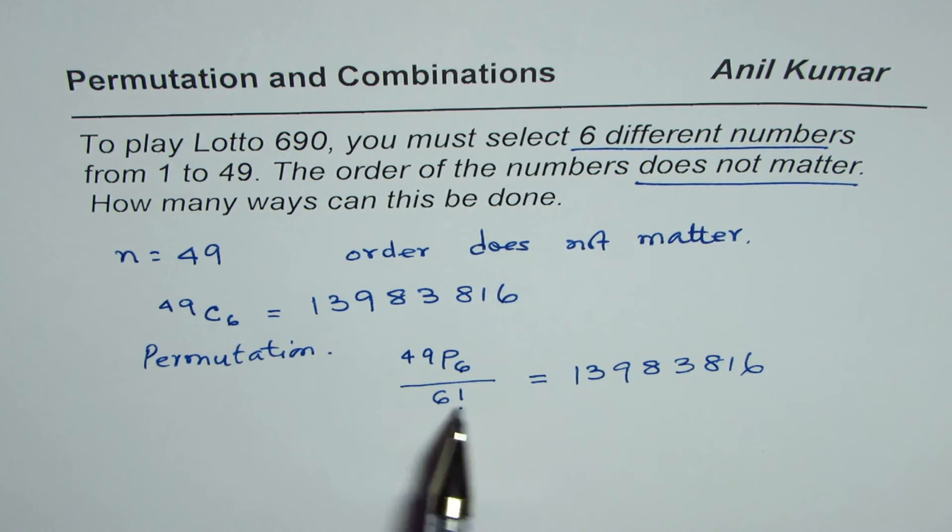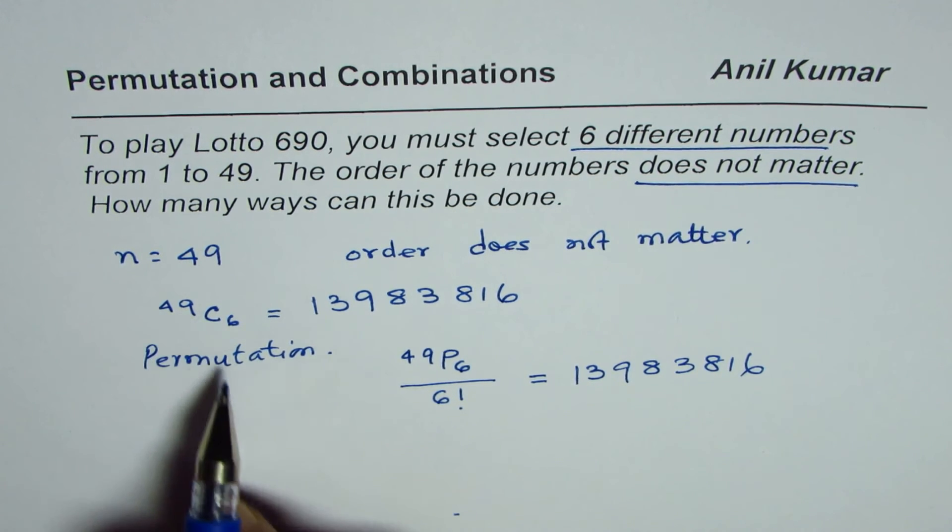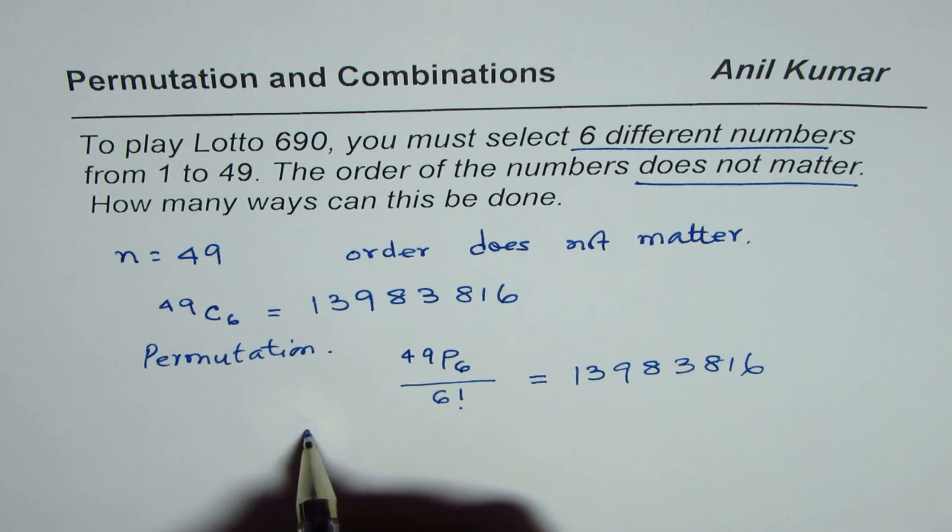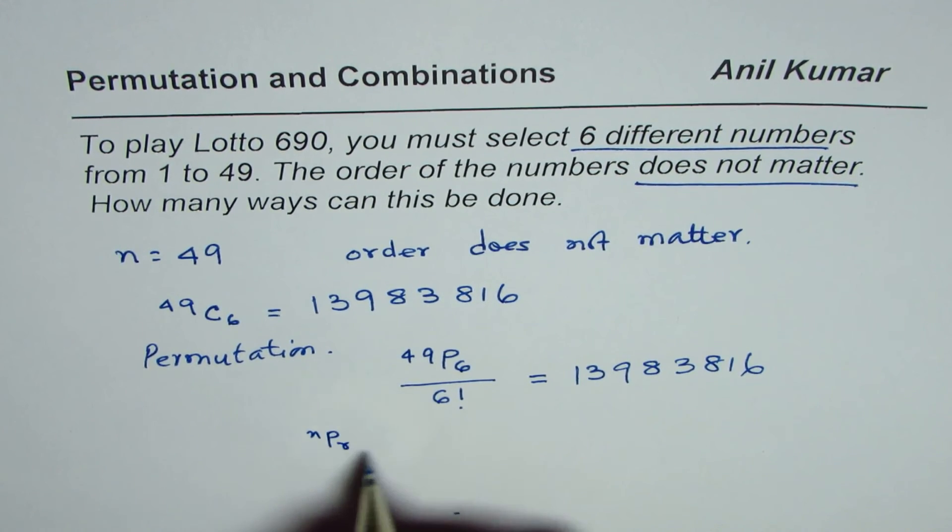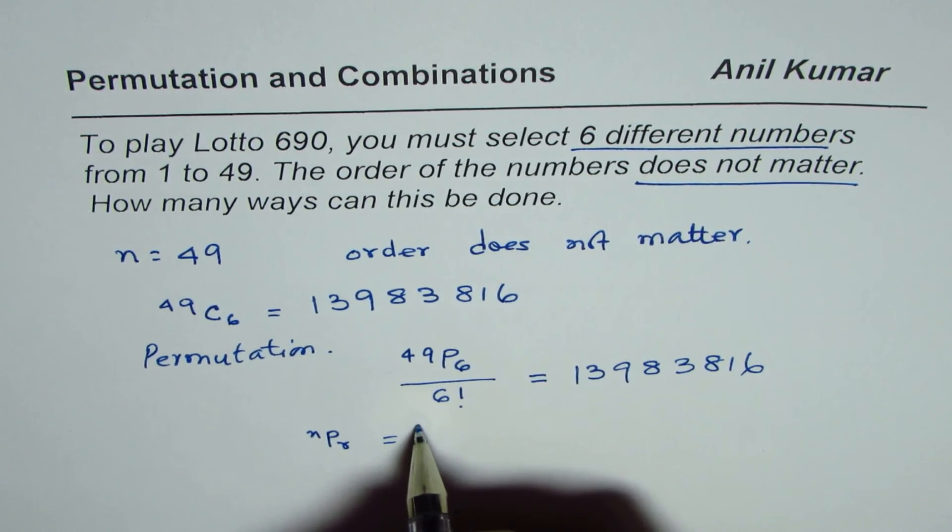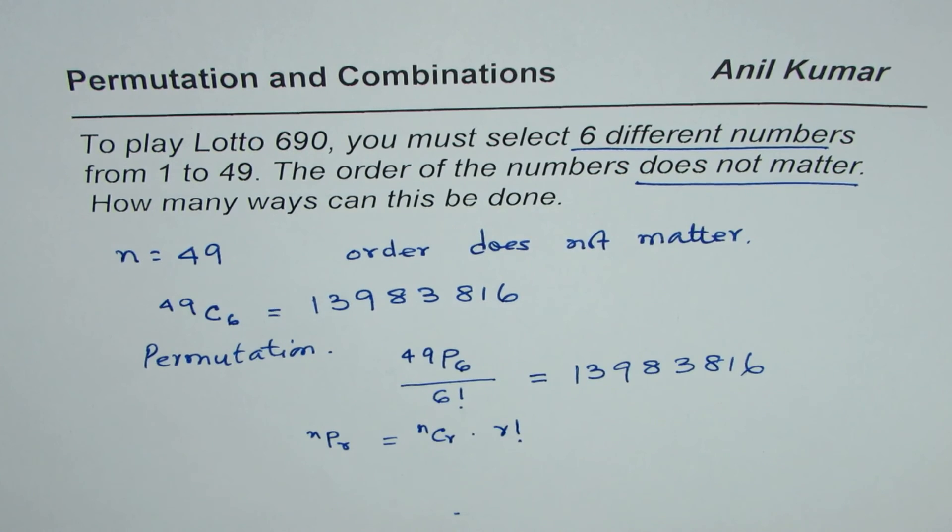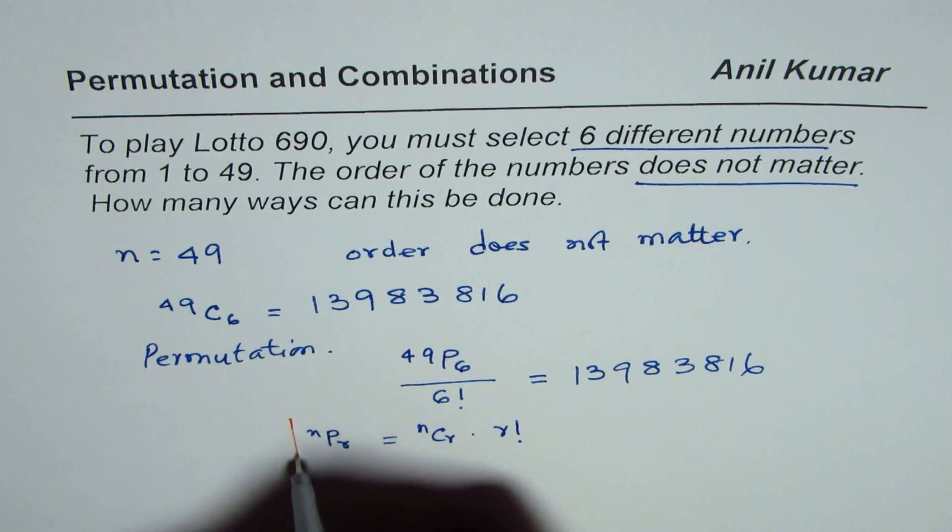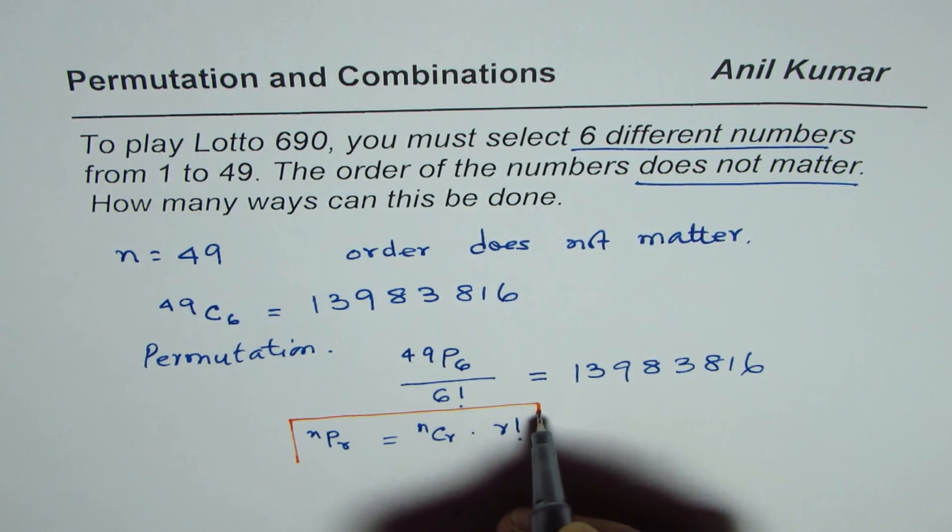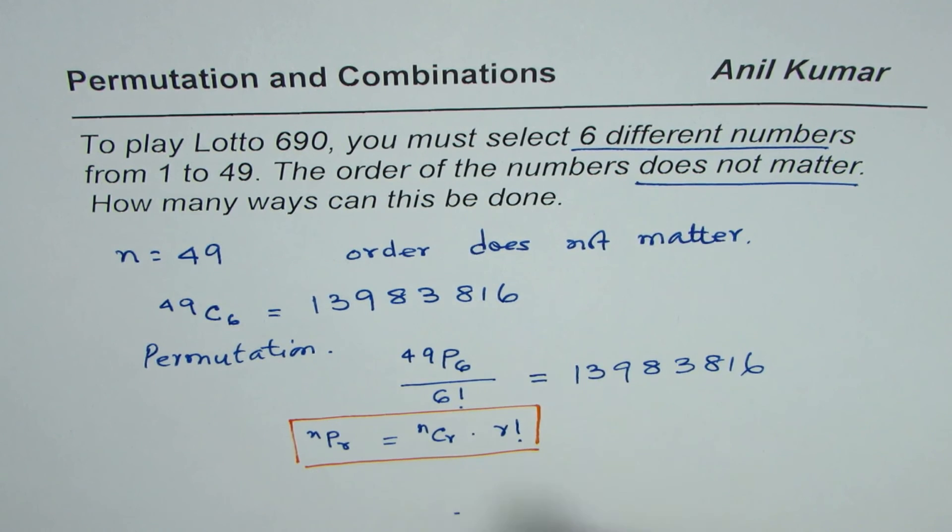So we divide it by that and that gives you the solution. And this reminds you the relation between the permutations and combinations. If you have nPr is equals to nCr times r factorial. So that is how they are related. And many times, we can adopt permutation or combination to solve such questions. I hope that helps. Thank you and all the best.